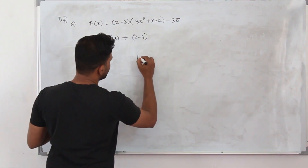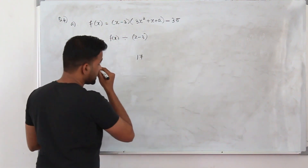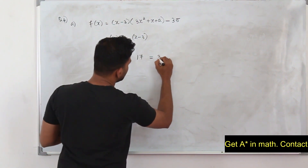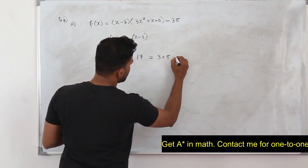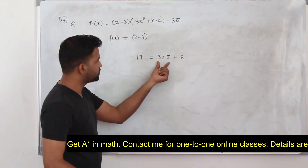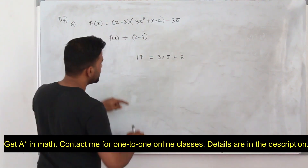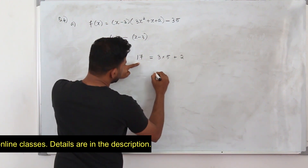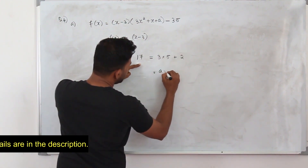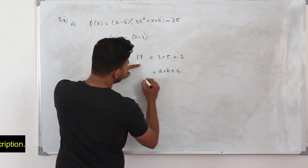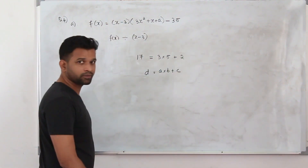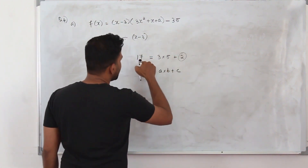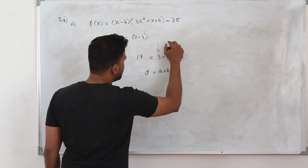Let's take a simple number — say 17. You can write 17 as 3 times 5 plus 2, which is 15 plus 2. If you can write a number D in the form A times B plus C, then C is the remainder when D is divided by A or by B.